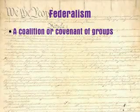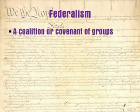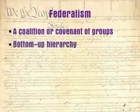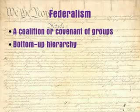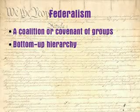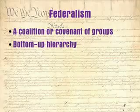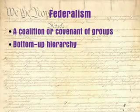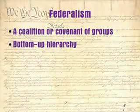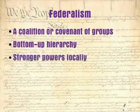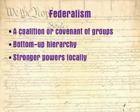A federal system, or a federation, is a coalition or covenant of different groups — in this case, states. The state governments came together to join a union, a federation, and the Constitution creates that union. A federal system is a bottom-up hierarchy, with supreme power emanating from below — in this case from the people — who give some powers to the state governments, and the states give even fewer powers to the federal government. This results in local governments having the most power.